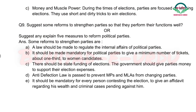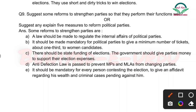Last and most important question — maximum chances hain paper mein aane ke: Suggest any five measures to reform political parties — political parties ko better banane ke liye 5 steps batao. First: A law should be made to regulate the internal affairs of political parties — ek aisa kanoon banana chahiye jiske according political parties ke internal affairs ke baare mein pata chale aur regulate hota jaye.